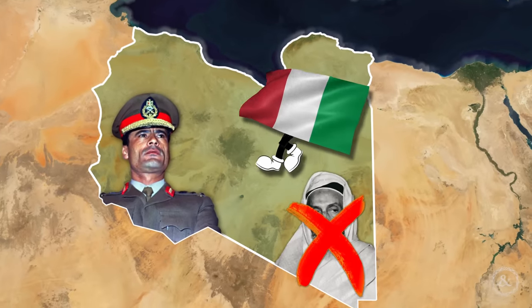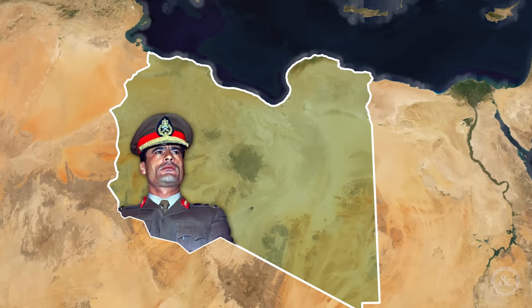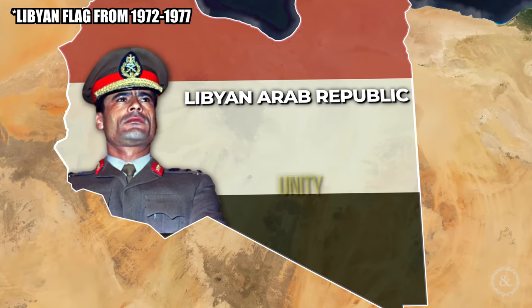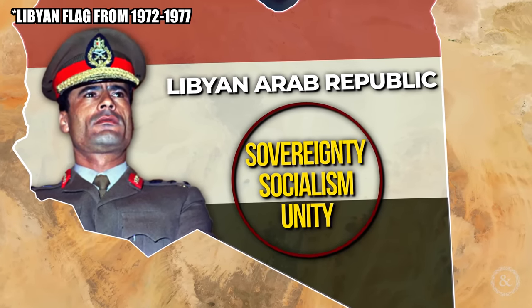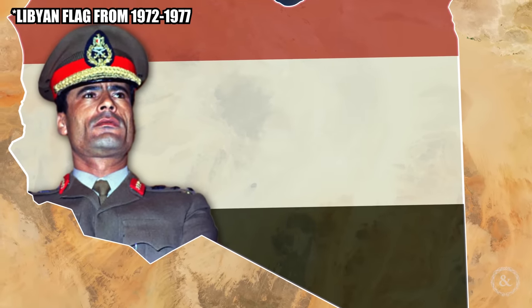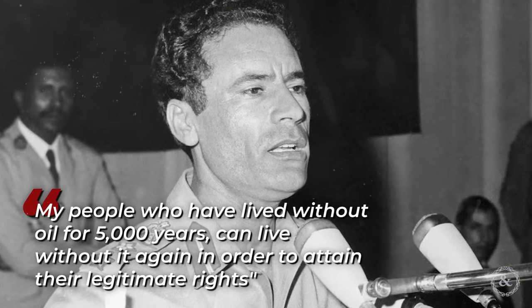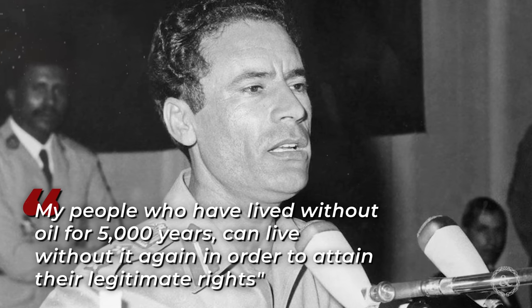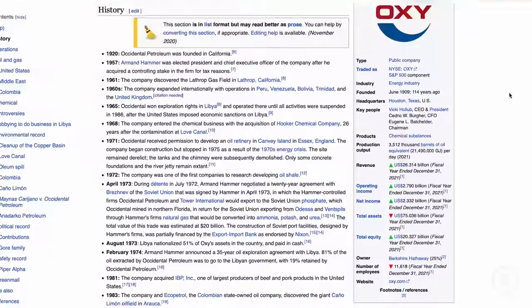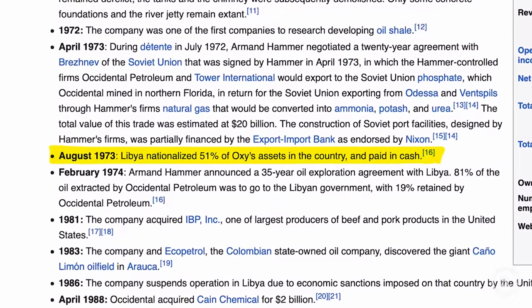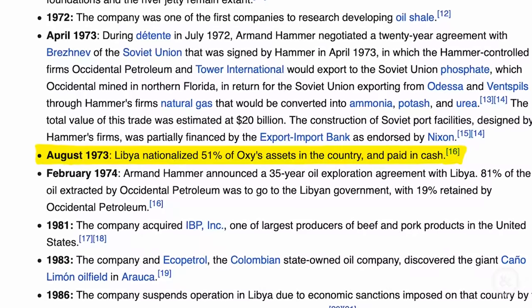He then abolished the monarchy, kicking out any remaining Italian people from the country, and established the Libyan Arab Republic. This new government identified with the ideals of sovereignty, socialism, and unity. Most importantly, Gaddafi demanded renegotiation of the oil contracts with foreign companies. He threatened to completely shut off oil production to the West if they wouldn't give him better terms. Gaddafi said, 'My people have lived without oil for 5,000 years. We can live without it again in order to attain our legitimate rights.' The American oil company Occidental gave in to his demands, and Libya became the first developing country to successfully secure a majority share of revenues from their own oil resources. This set a precedent that other Arab nations demanded the same equal treatment.